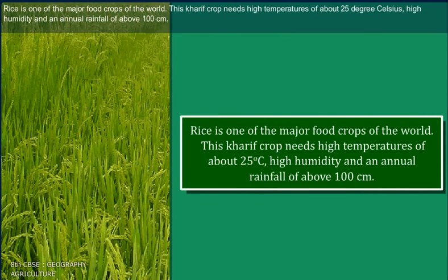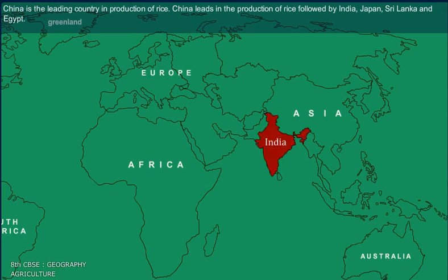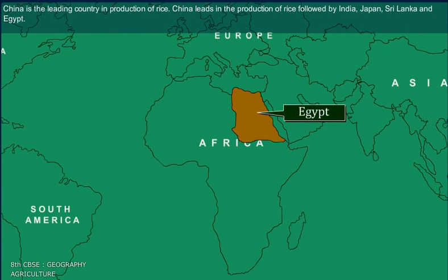Rice is one of the major food crops of the world. This kharif crop needs high temperatures of about 25 degrees Celsius, high humidity, and an annual rainfall of about 100 cm. China is the leading country in production of rice, followed by India, Japan, Sri Lanka, and Egypt.